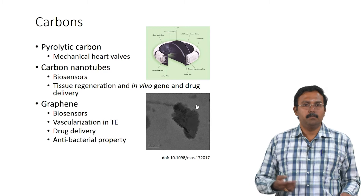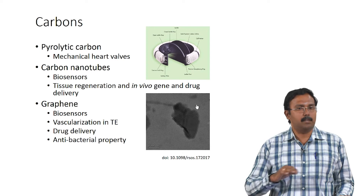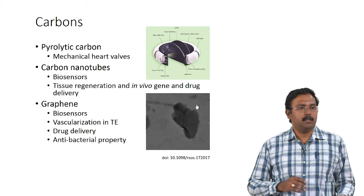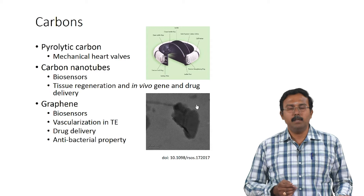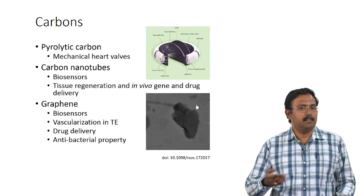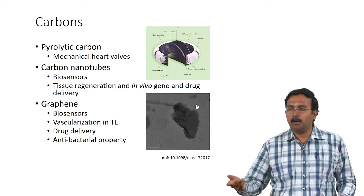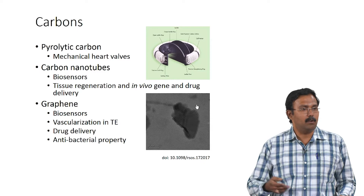Carbons are basically different allotropes of carbon. Pyrolytic carbon is used as a coating for mechanical heart valves. Diamond-like carbon is also used for coating on heart valves and blood-contact devices because it has very good hemocompatibility. Carbon nanotubes have attracted a lot of interest in the last couple of decades and are being used for biosensors, bone regeneration, gene delivery, and drug delivery. More recently, graphene and graphene-based compounds — graphene oxide and reduced graphene oxide — are also being explored.